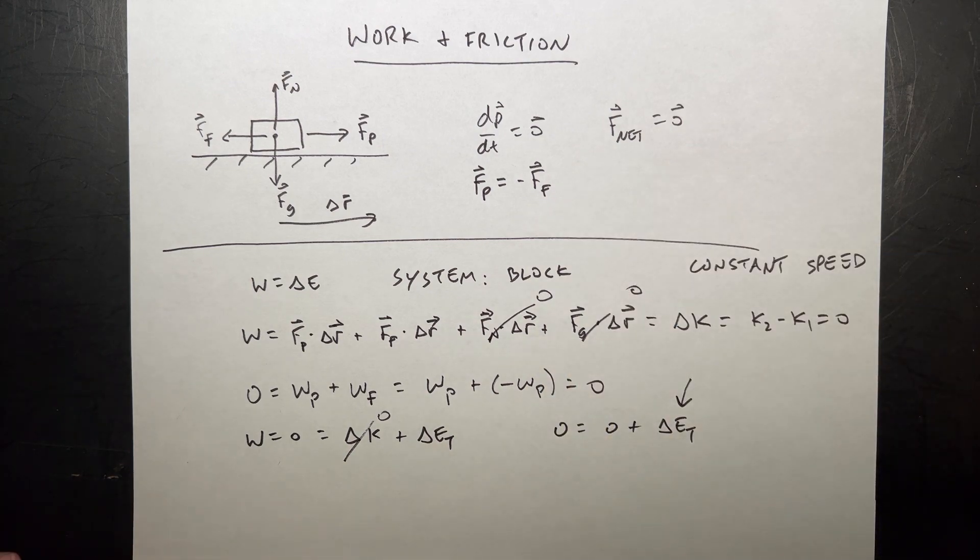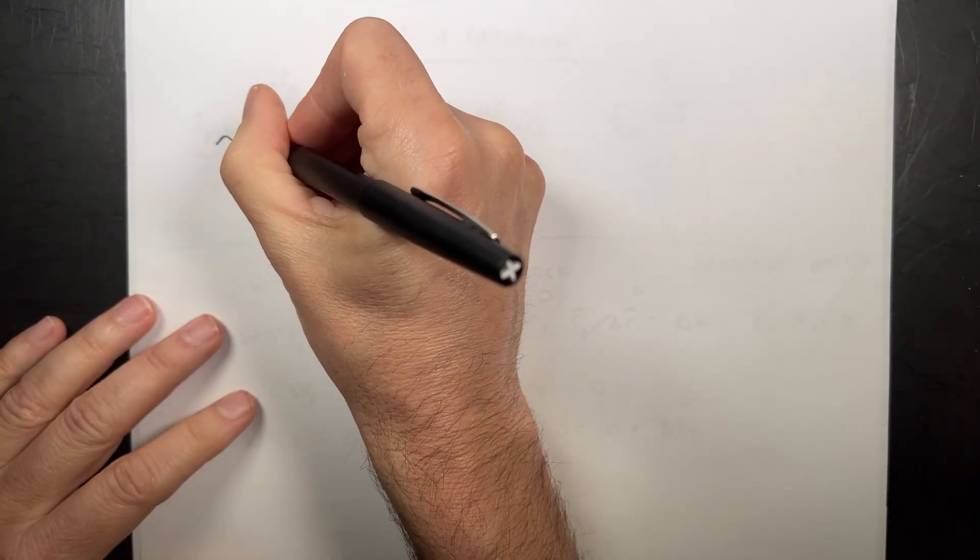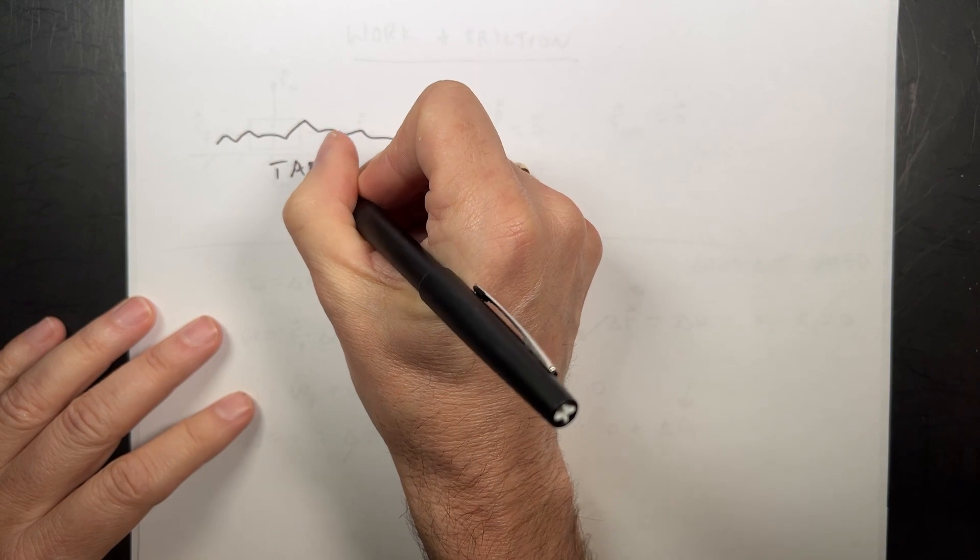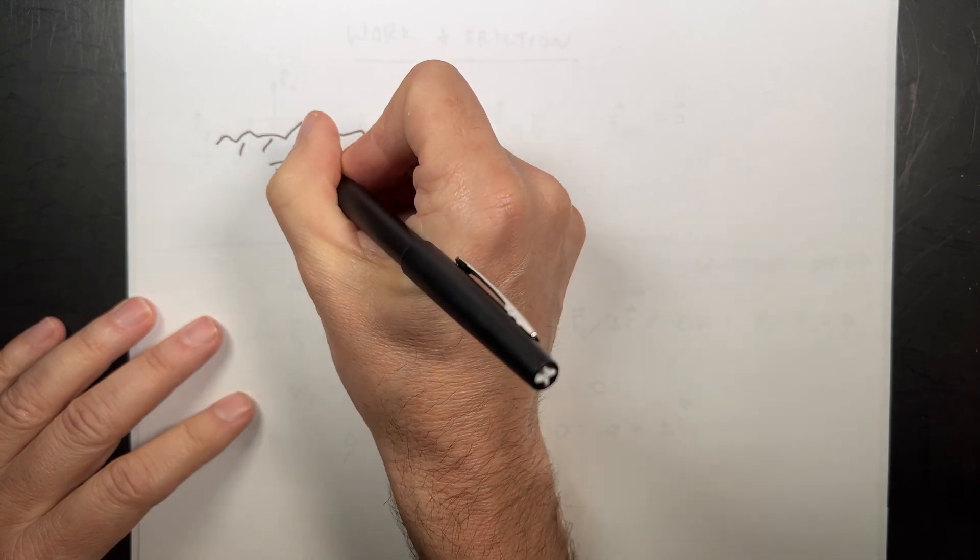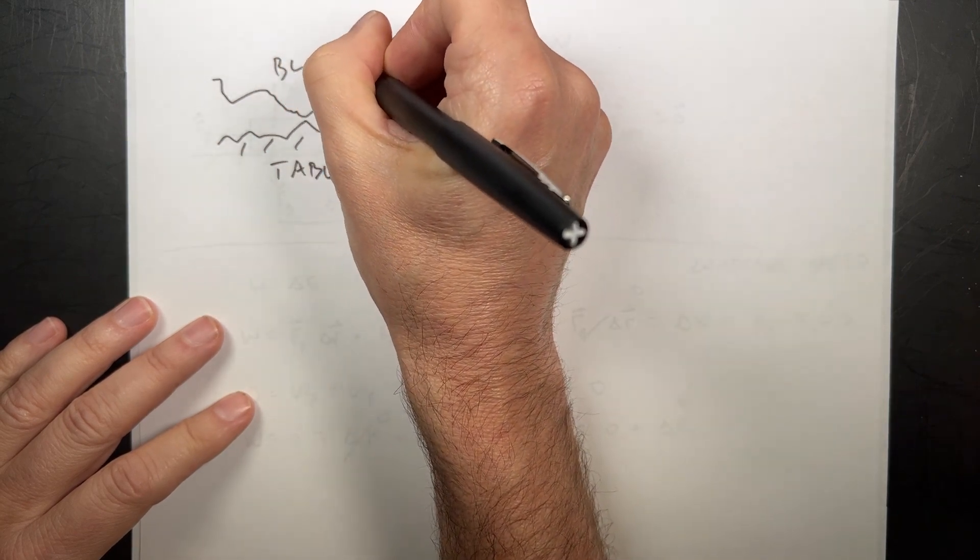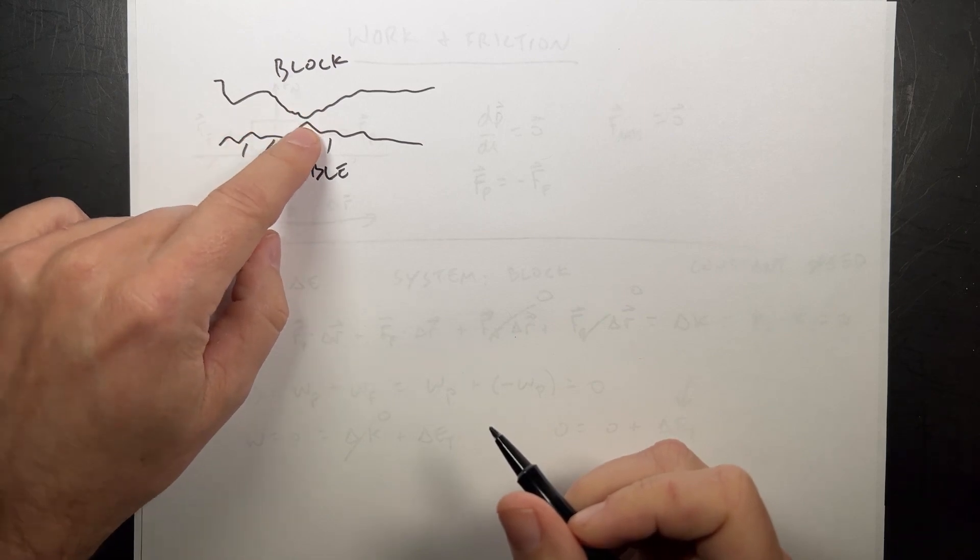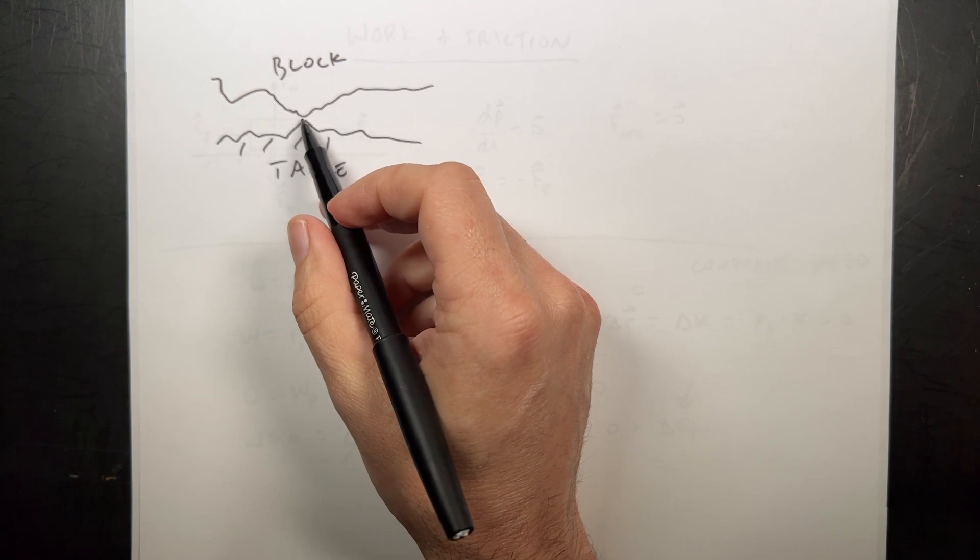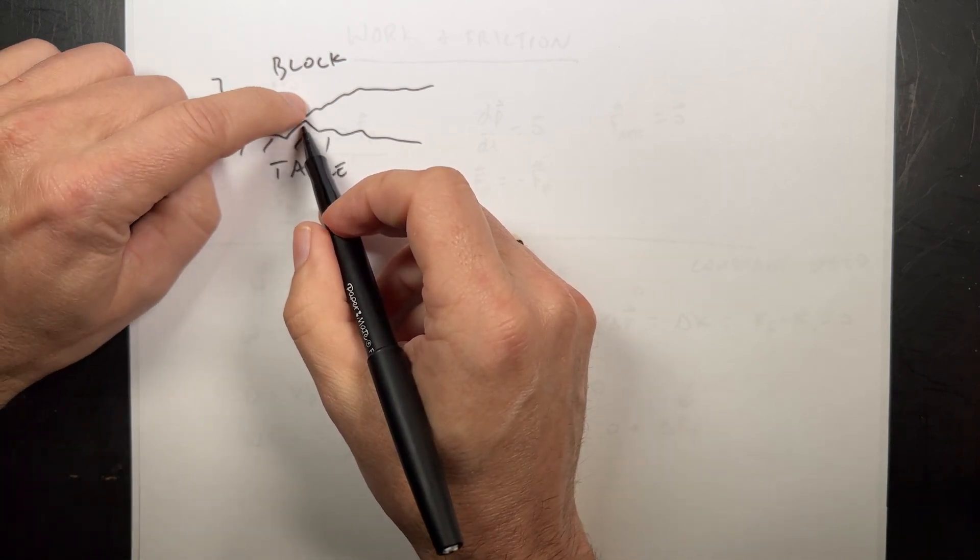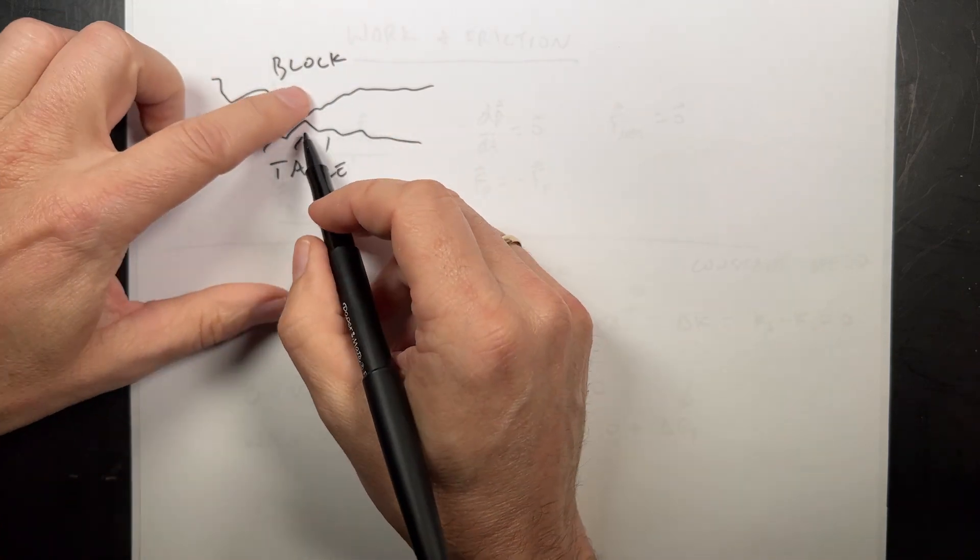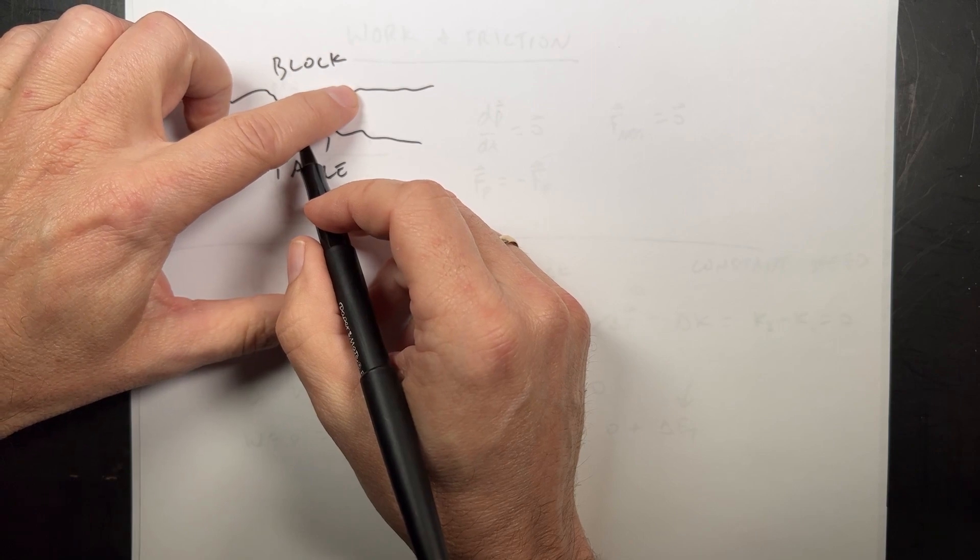So the solution to this is, number one, friction is super complicated. Imagine if you were able to look at the surfaces of these two things. Here's the table. It's paper actually. So here's my table, and then here's my block. This is zoomed in. And so the atoms in each of these interact with each other. But what actually happens is that when these are in contact, there's a deformation. So in fact, this block kind of deforms the whole thing and drags around.